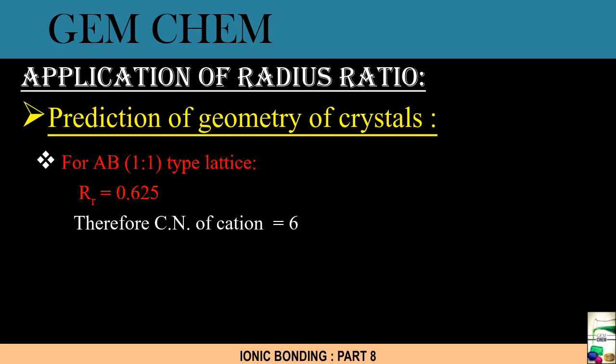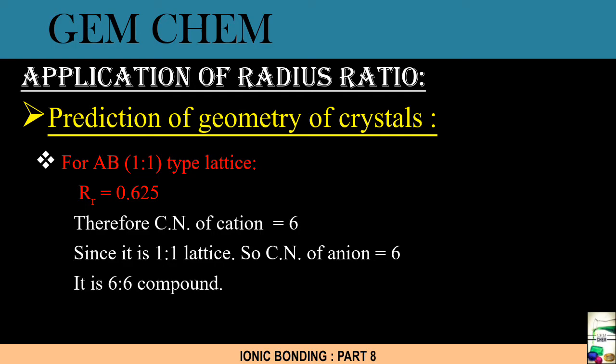Therefore, the coordination number of cation is 6, and we can see that the lattice type is 1:1. So we can see the coordination type is 1:1, right? The number of cations must be equal to the number of anions. So the anion coordination number will also be equal to 6. As a result of which we can see that it is a compound with 6:6 ratio. So we can conclude that it is a NaCl structure because NaCl also has a coordination number of 6 for cation and coordination number of 6 for anion.